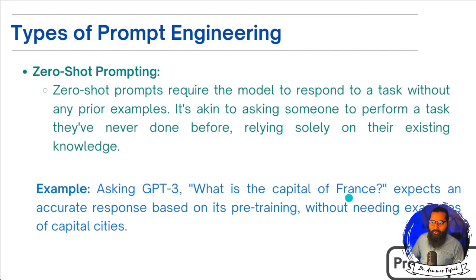Zero-Shot means you ask without giving any examples and you get the answer. For instance, you don't give examples like Pakistan's capital is Islamabad, Germany's capital is Berlin, or Italy's capital is Rome. If you give those examples first, it is no longer Zero-Shot. Zero-Shot is simply asking the question directly — like 'What is the capital of France?' — and the model gives you the answer without any example.